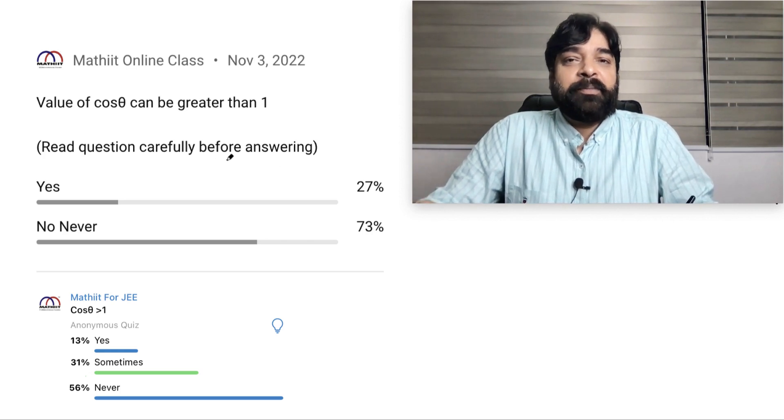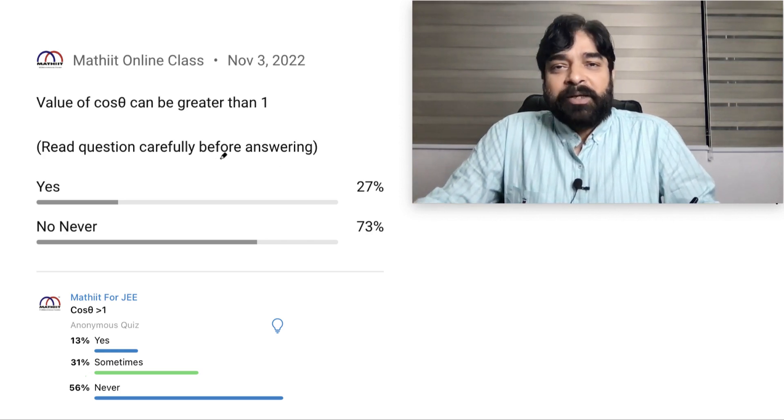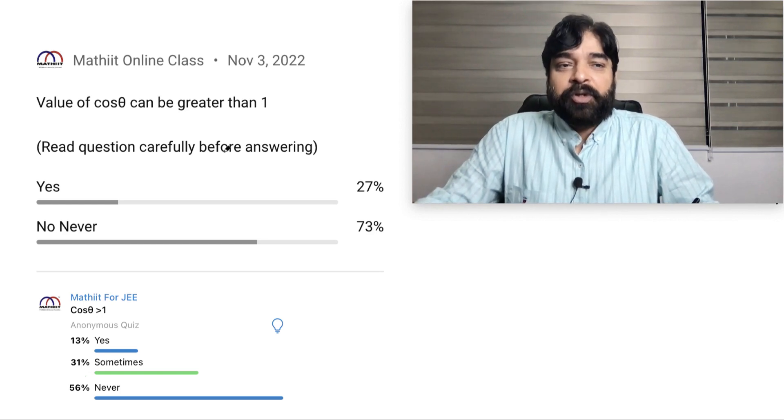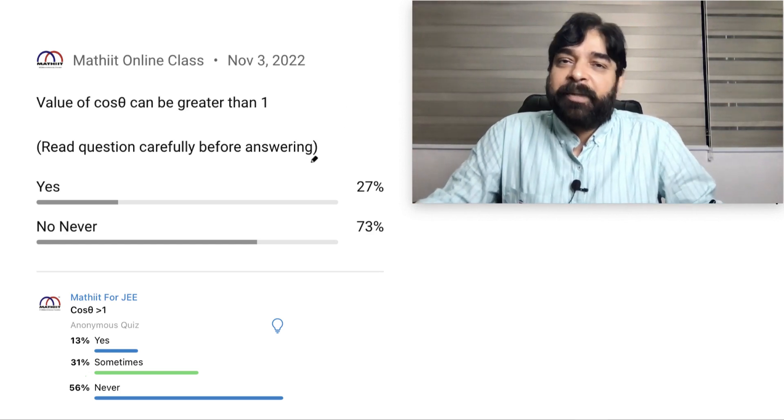Why? Because I don't want to create just trick kind of things. You should read what exactly question I'm asking. I'm asking: cos θ can be greater than one. Is it true statement or false?